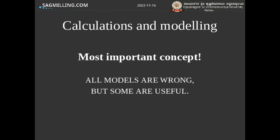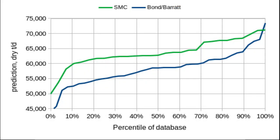Another concept is that multiple models should lead to roughly the same answer. If you are doing a design or de-bottlenecking, it's good practice to run multiple different models with different calibrations to make sure that what you're seeing is reproducible. If you're in a situation where two models give very different results, it's a sign that you're probably outside of the calibration data set of some of these models, and being outside of that calibration space is very dangerous. When models don't agree, one thing you can do is choose the most conservative model for your design or optimization.